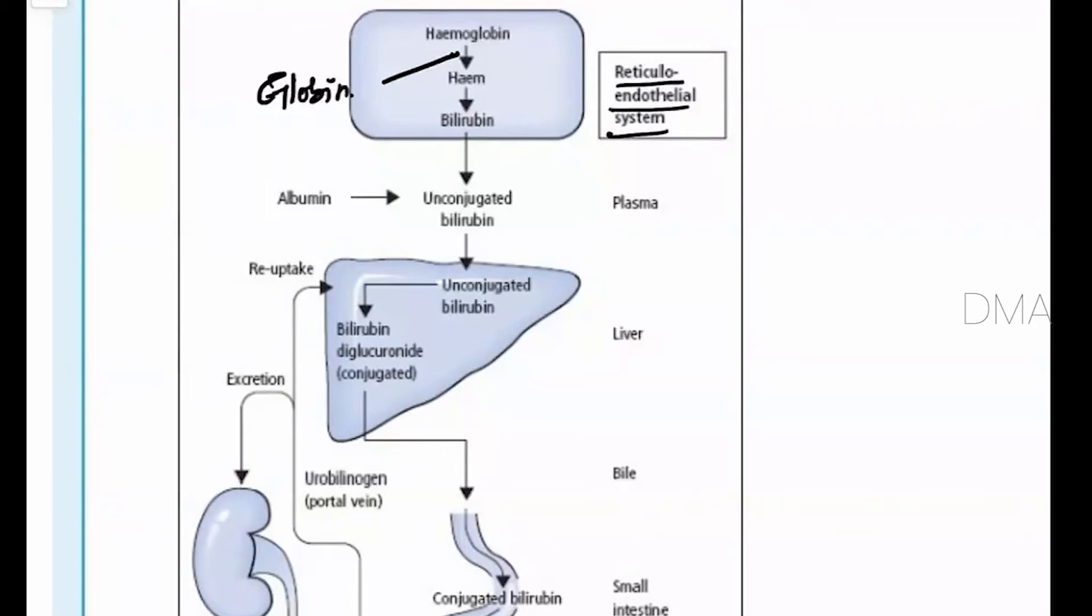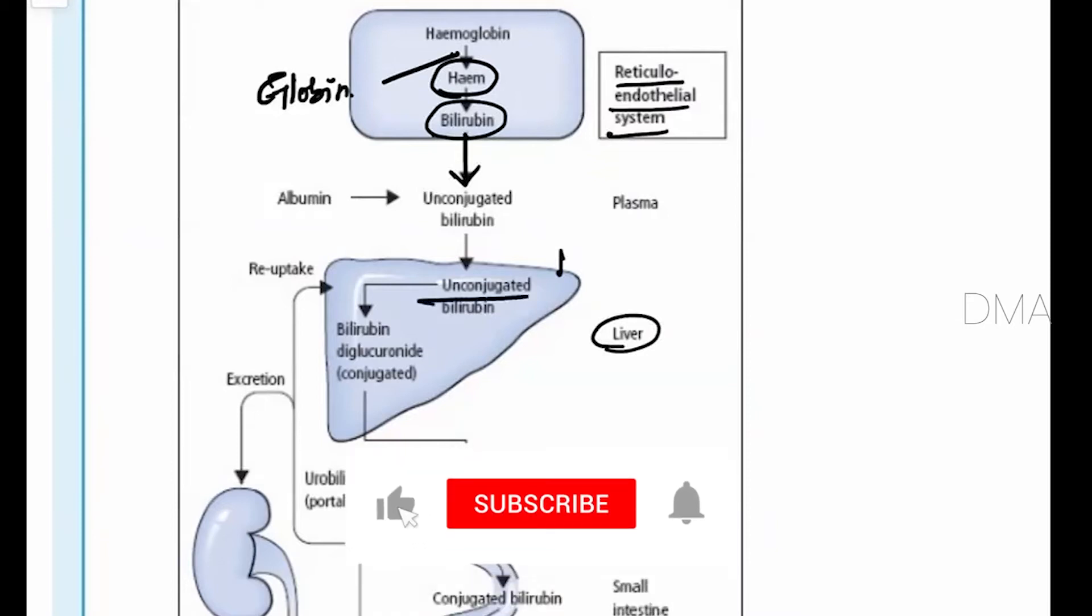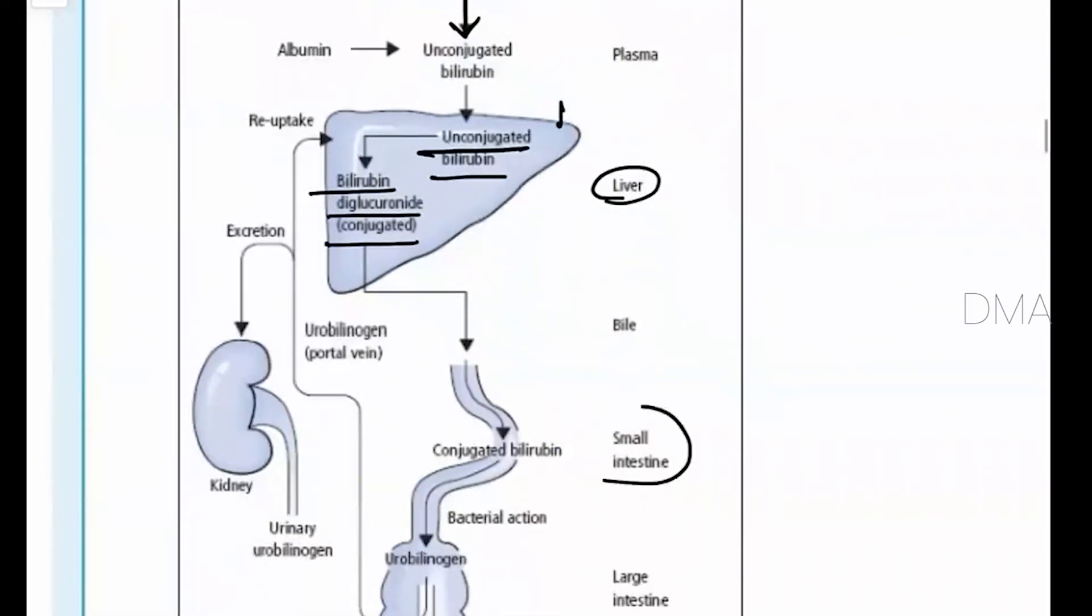So now this heme which is formed in the reticuloendothelial cells is transformed into bilirubin. And this bilirubin from the reticuloendothelial system will enter into the liver where it is remaining as unconjugated bilirubin, where it is combining with the contents and it forms conjugated bilirubin. And this conjugated bilirubin enters into the small intestine and will also remain as a composition in the bile.